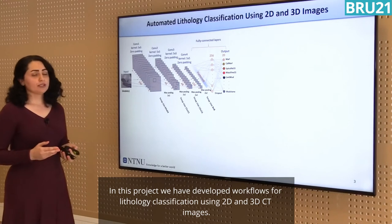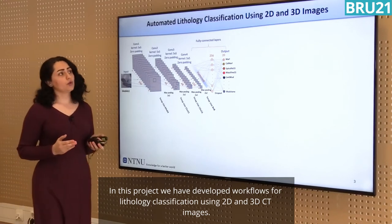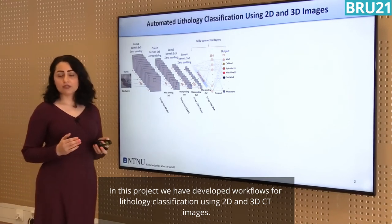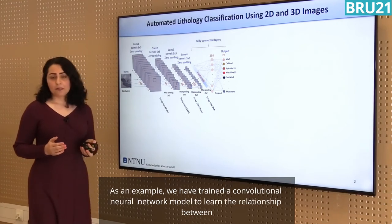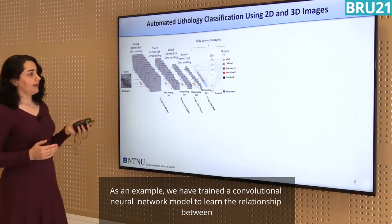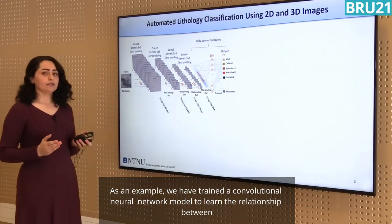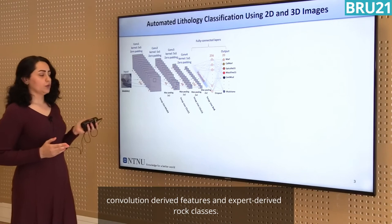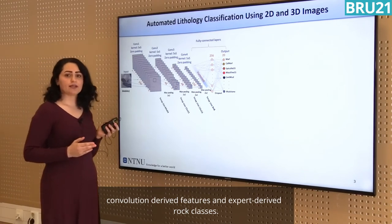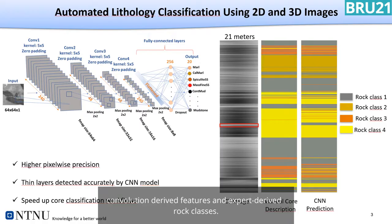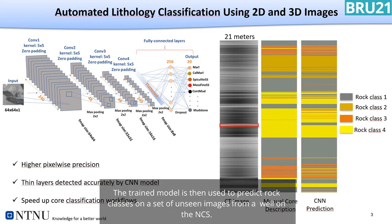In this project, we have developed workflows to classify lithology using 2D and 3D CT images. As an example, we have trained a convolutional neural network to learn the relationship between convolution-derived features and expert-derived rock classes. The trained model is used to predict rock classes on completely unseen images from a well in the Norwegian continental shelf.